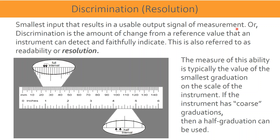Resolution, or discrimination, is the amount of change from a reference value that an instrument can detect and faithfully indicate. This is also referred to as readability or resolution. The measure of this ability is typically the value of the smallest graduation on the scale of the instrument.